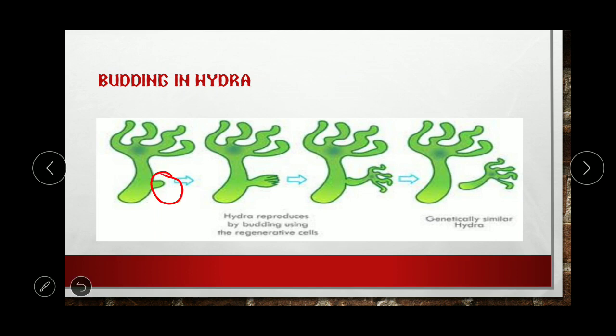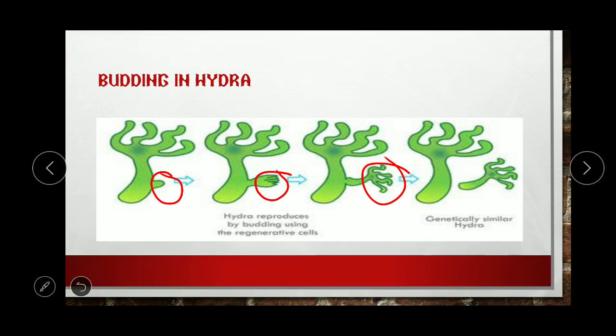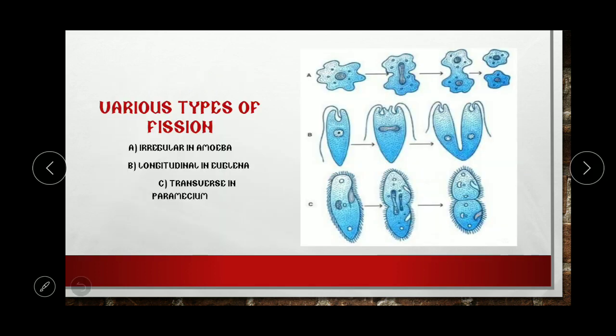Now, budding in Hydra. A bud is an outgrowth — the outgrowth gradually increases in size, and once it reaches its maximal size, it detaches from the parent organism. Budding in Hydra and budding in yeast are both the same phenomenon.